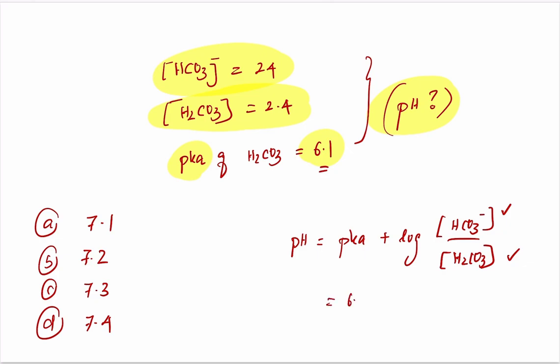So it is 6.1 plus logarithm of 24, which is the concentration of bicarbonate, and 2.4, which is the concentration of carbonic acid. This becomes log of 24 by 2.4, which means the pH value is equal to 6.1 plus logarithm of 10, because 24 by 2.4 is 10.